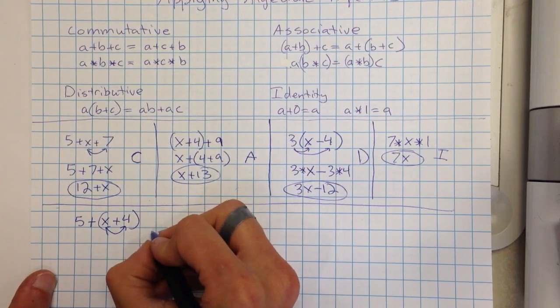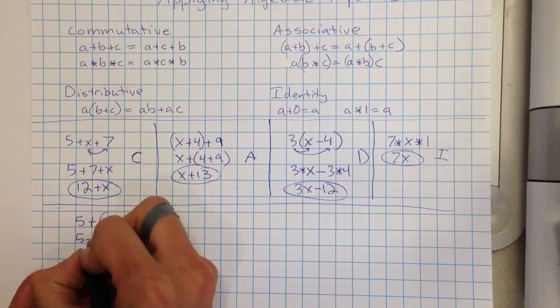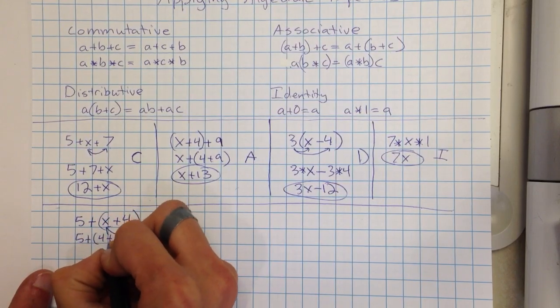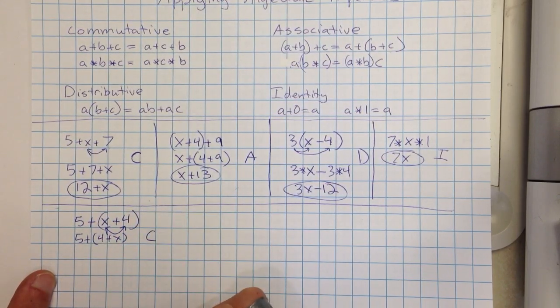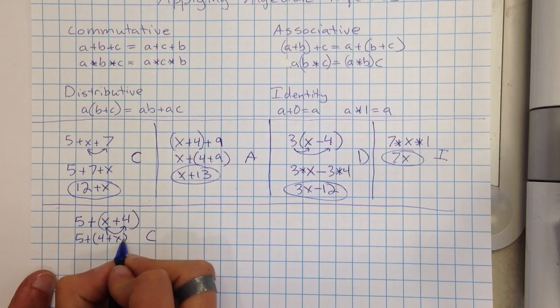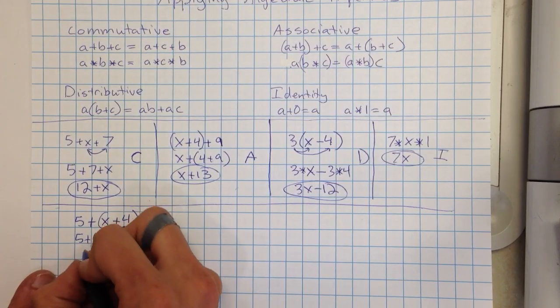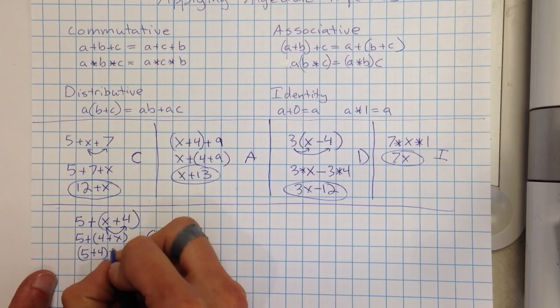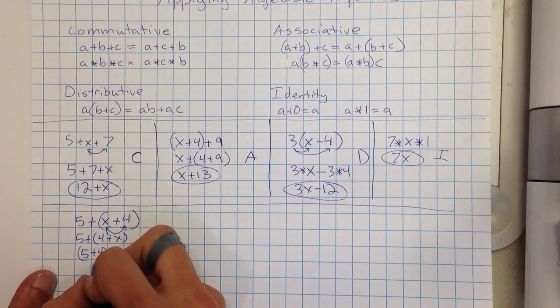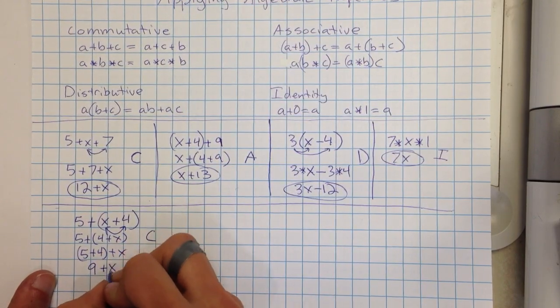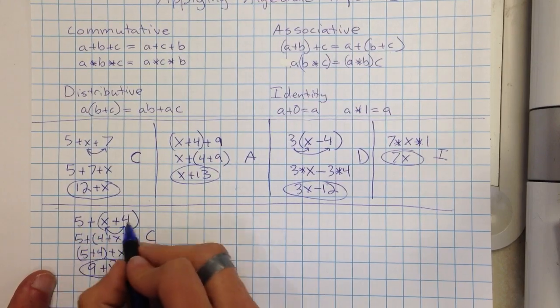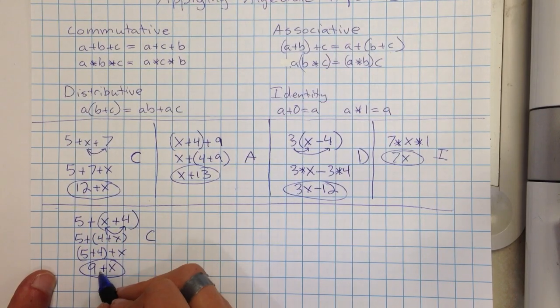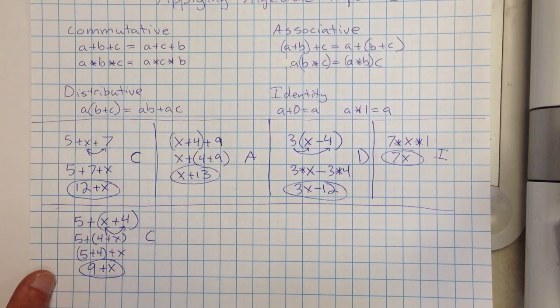That's going to be the commutative property. I'm going to rewrite this as 5 plus parentheses 4 plus X. Then now I can take the parentheses and just shift those over to the left. I'm not moving the numbers, I'm just shifting the parentheses. And I could rewrite that now as 9 plus X. So I've taken, again, three different things and I've combined it and turned it into 9 plus X.